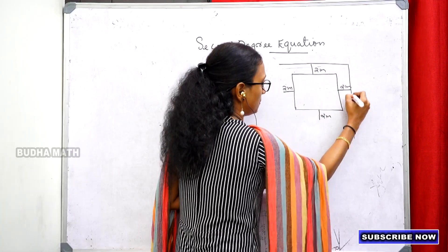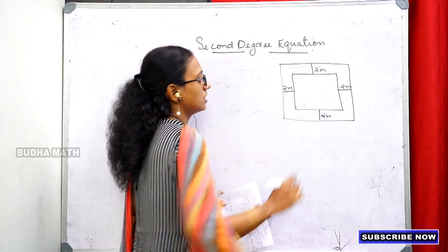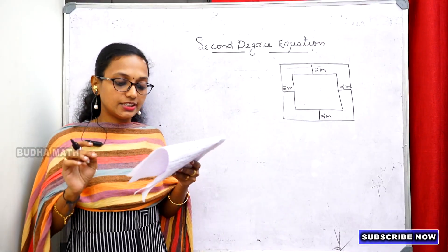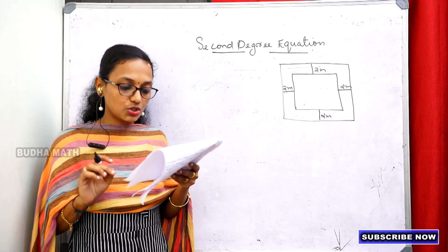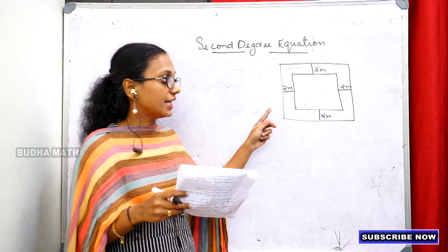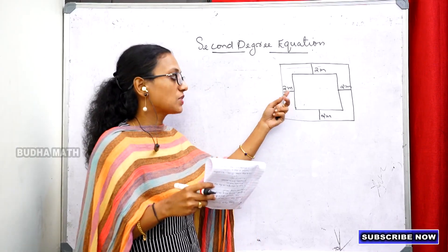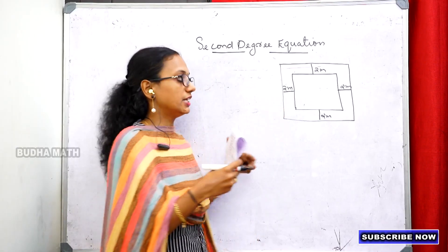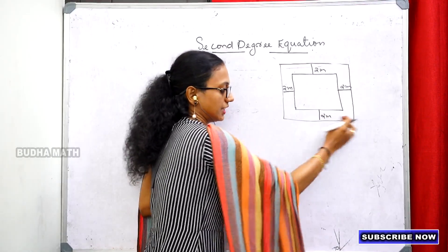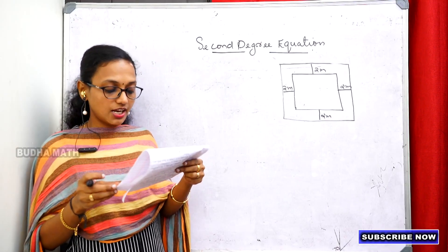This is the path going around the square ground. The total area of the ground and the path is 1,225 square meters.